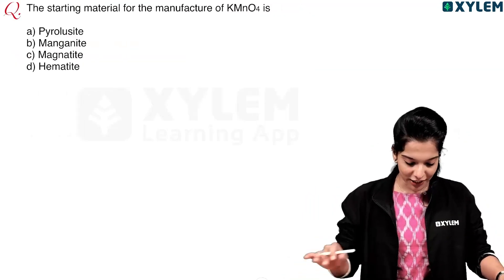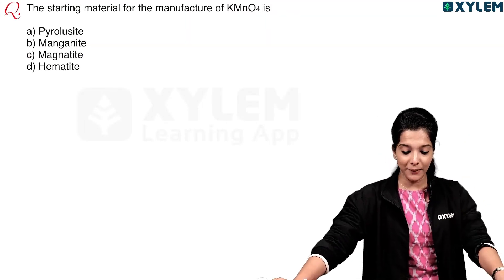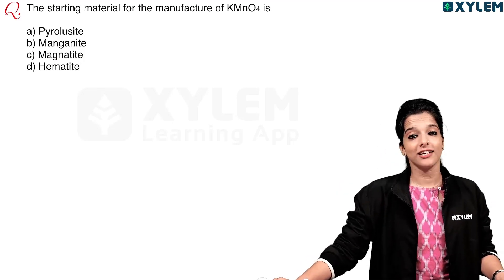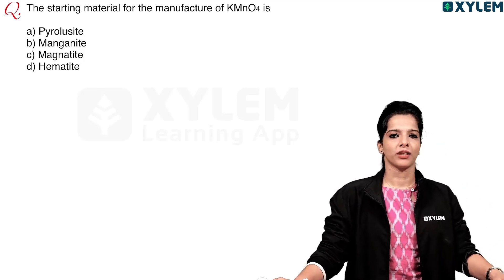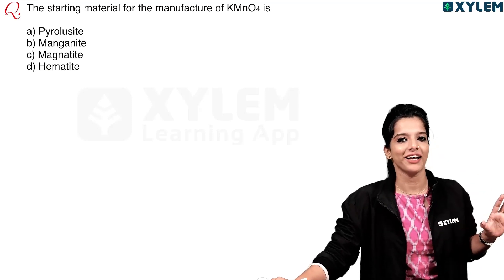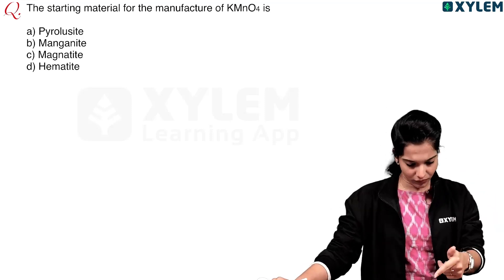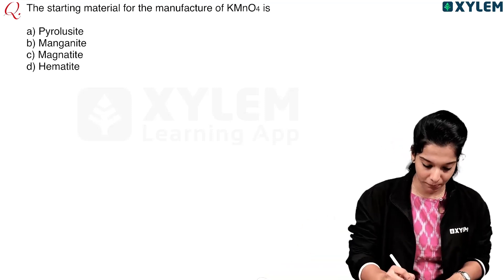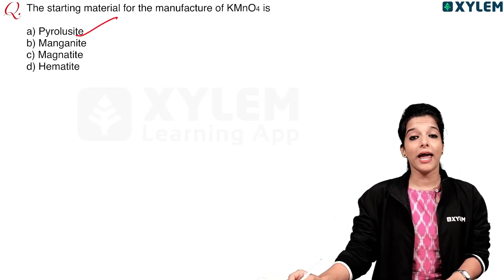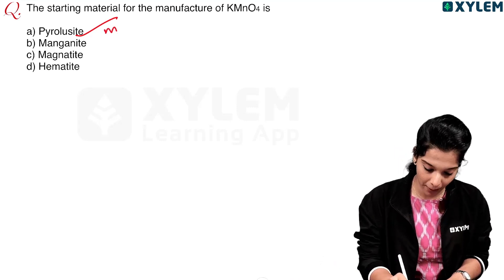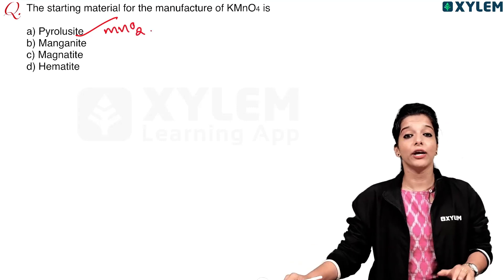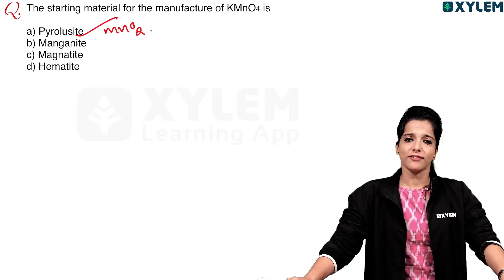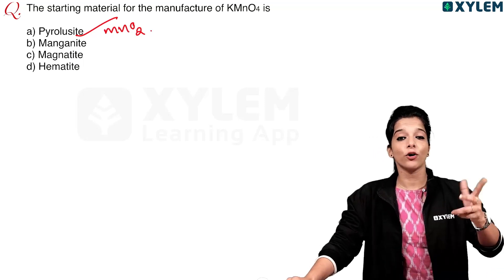The starting material for the manufacture of potassium permanganate (KMnO₄) is pyrolusite. Pyrolusite is MnO₂. This is a very important point — the starting material for potassium permanganate is MnO₂, pyrolusite.